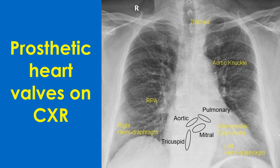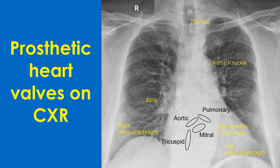A line connecting the pulmonary bay to the right cardiophrenic angle is used to determine the positions of the aortic and mitral valves. The mitral valve is below this line while the aortic valve is above it. The tricuspid valve is a midline structure. The actual positions may vary from case to case, especially with differential enlargement of the cardiac chambers.